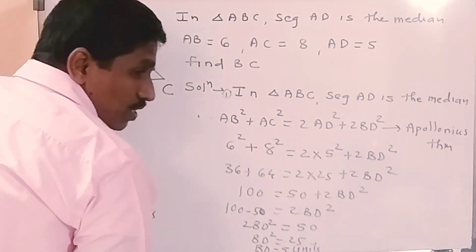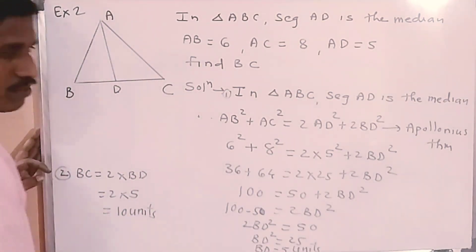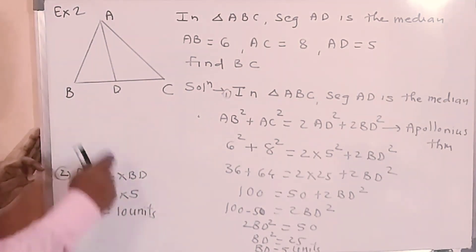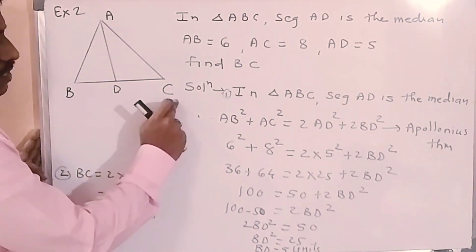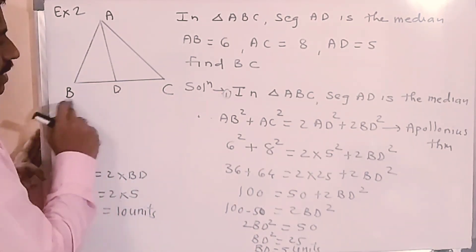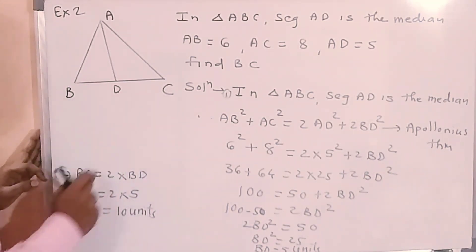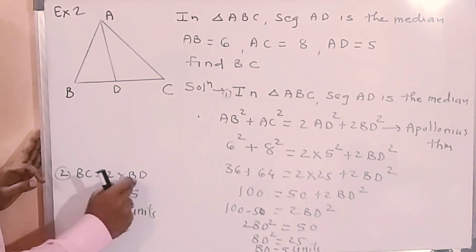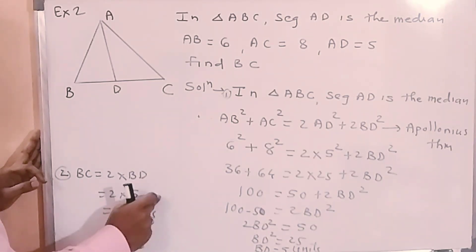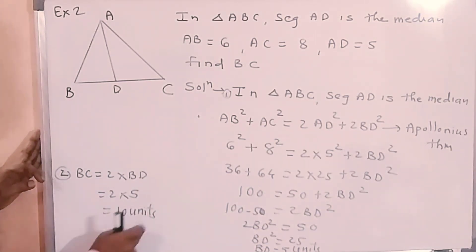Dividing by 2, BD square equals 25. Taking square root on both sides, BD equals 5. Since D is the midpoint of BC, BC equals 2 times BD, that is 2 into 5, so BC equals 10 units.